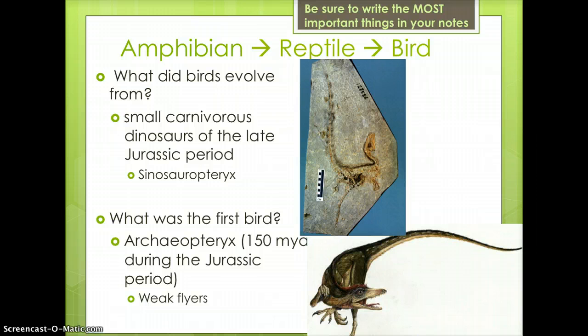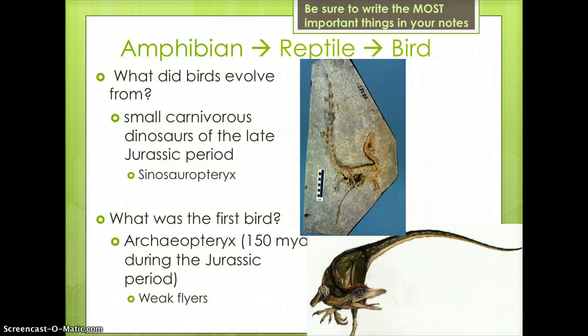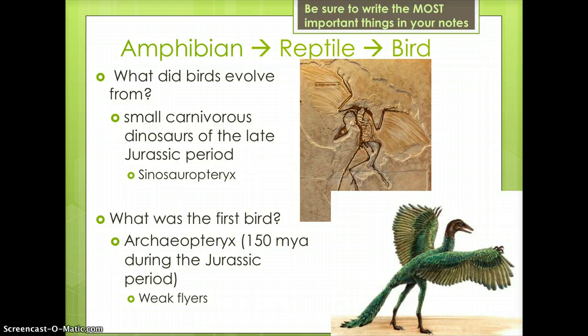Reptiles eventually evolved into birds. Birds evolved during the late Jurassic period from small carnivorous dinosaurs, like the Sinosauropteryx shown here. The first bird appeared in the fossil record approximately 150 million years ago during the Jurassic period. This bird was called the Archaeopteryx, shown here. These birds were very weak fliers.